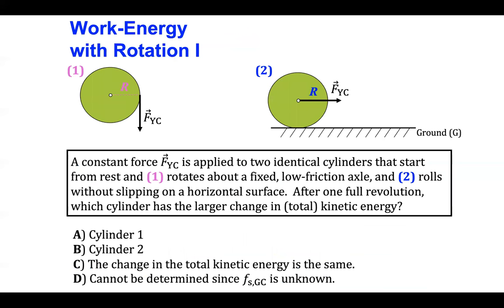The force is the same in both situations. Both cylinders are identical with the same radius R. The first cylinder can rotate about a fixed, low friction axis of rotation through the center, and the second cylinder can roll without slipping on a horizontal surface that we're going to define to be the ground. And the question is, after each cylinder has made one full revolution, which cylinder has a larger change in total kinetic energy?